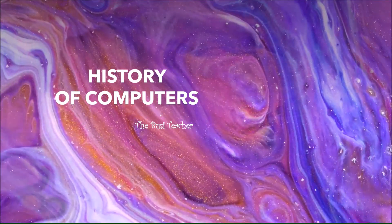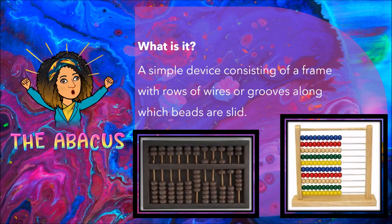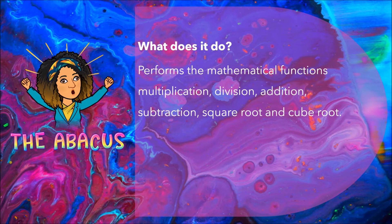Let's first examine the abacus. Now I know that some of you, if not all of you, have seen this device before. We got it as gifts when we were children and we were asked to make it in primary school — this wooden frame with rows of wires along which you can slide beads or bottle covers, or just about anything that helps you to count. But the abacus doesn't only help us to count; it also helps us to do other mathematical equations such as multiplication, division, subtraction, and the list goes on.